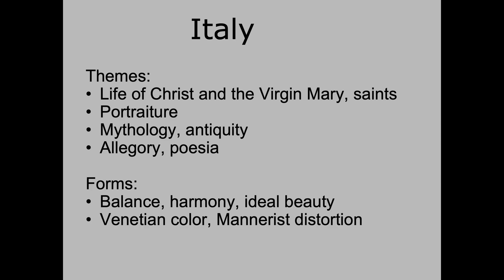In Venice, artists were really interested in color. Then there's this Mannerist distortion — it's kind of like a pendulum going back and forth. The artists of the High Renaissance perfected very balanced compositions, and then the artists that came after them said, 'That's boring, that's my parents' generation,' and started to distort the body in this kind of Mannerist style.